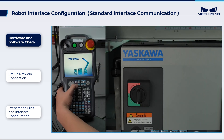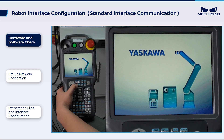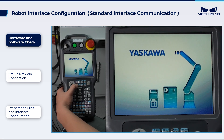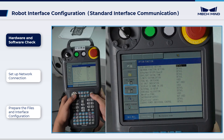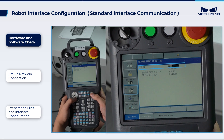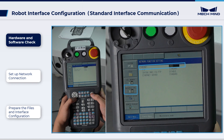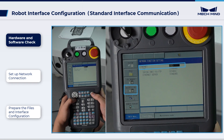Finally, press Main Menu when powering on the controller to enter maintenance mode. Please check whether Ethernet and MotoPlus functionalities are enabled on the robot. If they are not enabled, please contact the robot manufacturer for support.